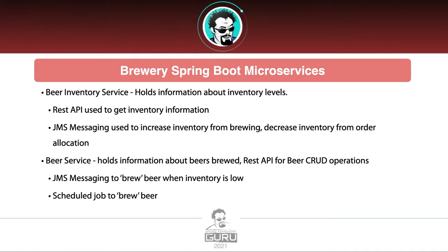The Beer Service itself is going to hold information about the different beers that our brewery is brewing, and expose a REST API for CRUD operations against those beers. We are using JMS messaging to say we've brewed beers to increase inventory — that sends out a message consumed by the Inventory Service to increase inventory. We also have a scheduled job that wakes up, checks the inventory balances, and creates brewing jobs to increase inventory.